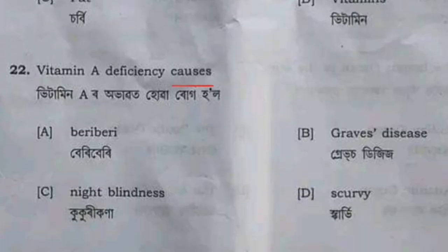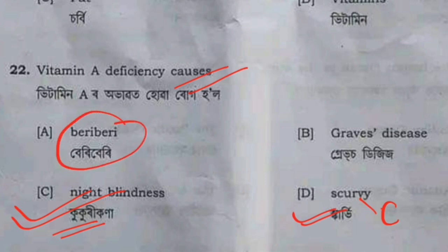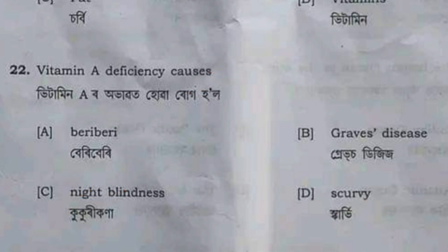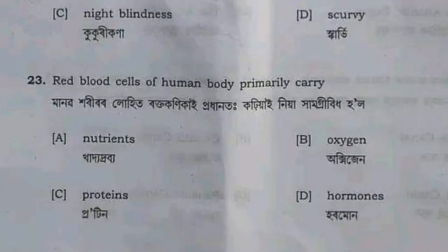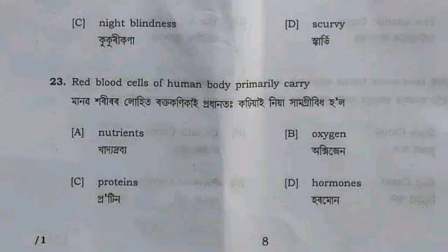Deficiency of vitamin A causes night blindness. Vitamin B and vitamin C deficiencies are also discussed. The red blood cells of the human body primarily carry oxygen. If you want to use the same thing, the answer is oxygen.